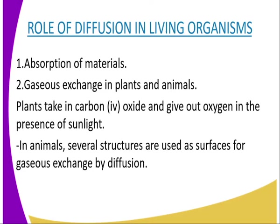In addition to that, digested foods — for example amino acids and glucose — move across the thin wall of the ileum by diffusion into the bloodstream for transport to other parts of the animal's body. In this case, the digested food materials are highly concentrated in the ileum, which is the small intestine, and move to the blood where they are in lower concentration.